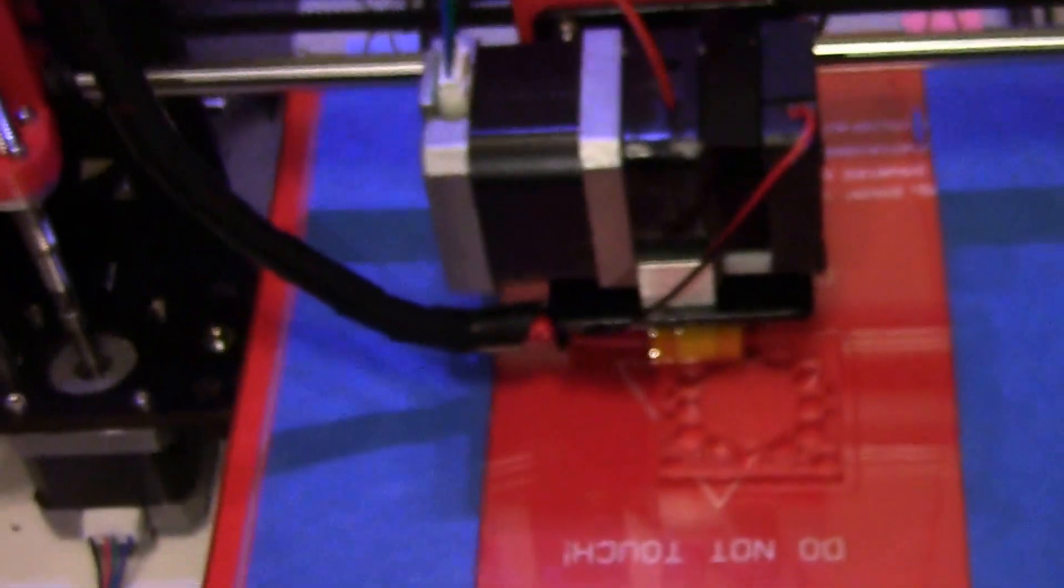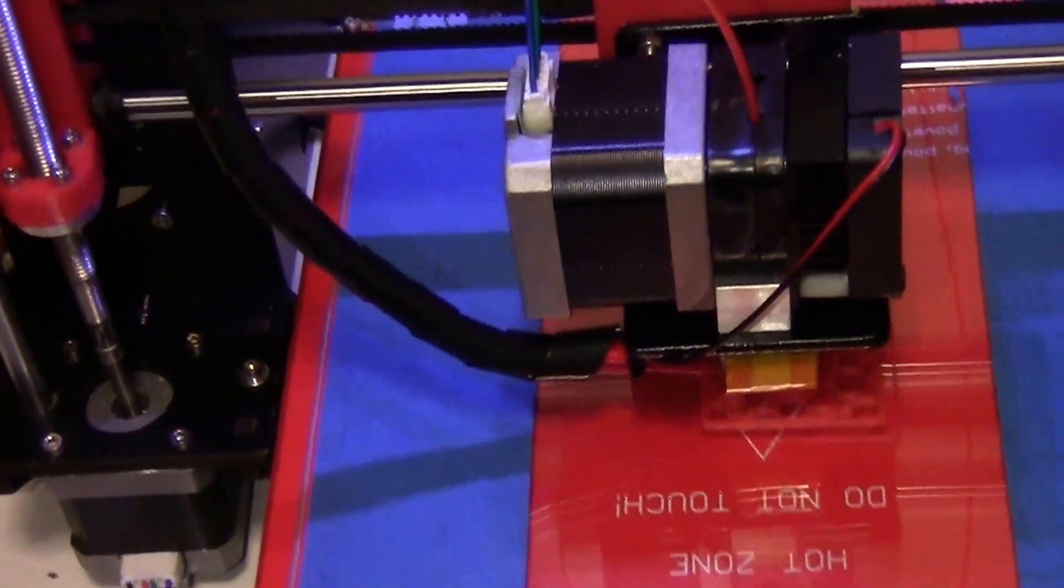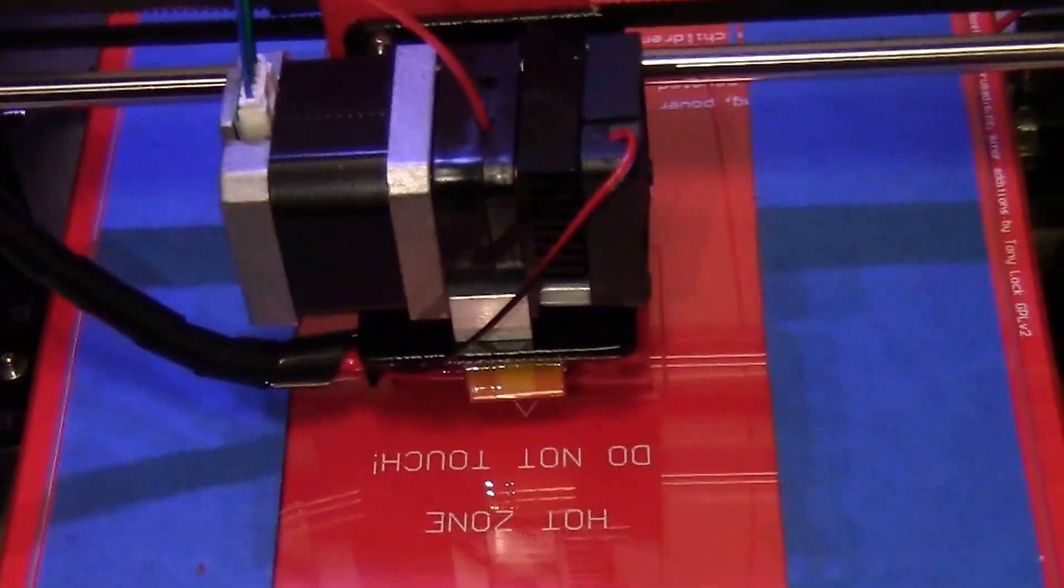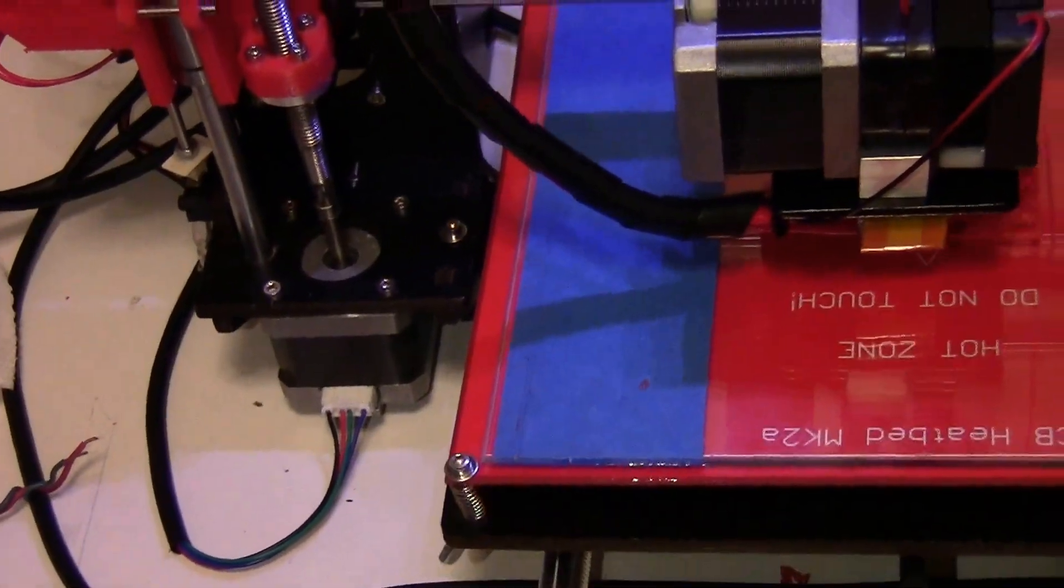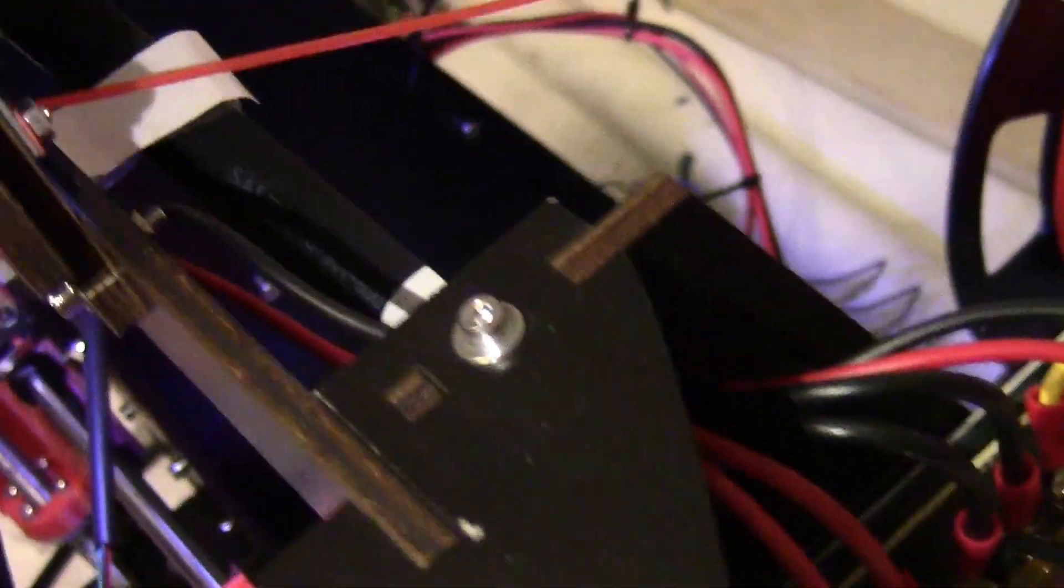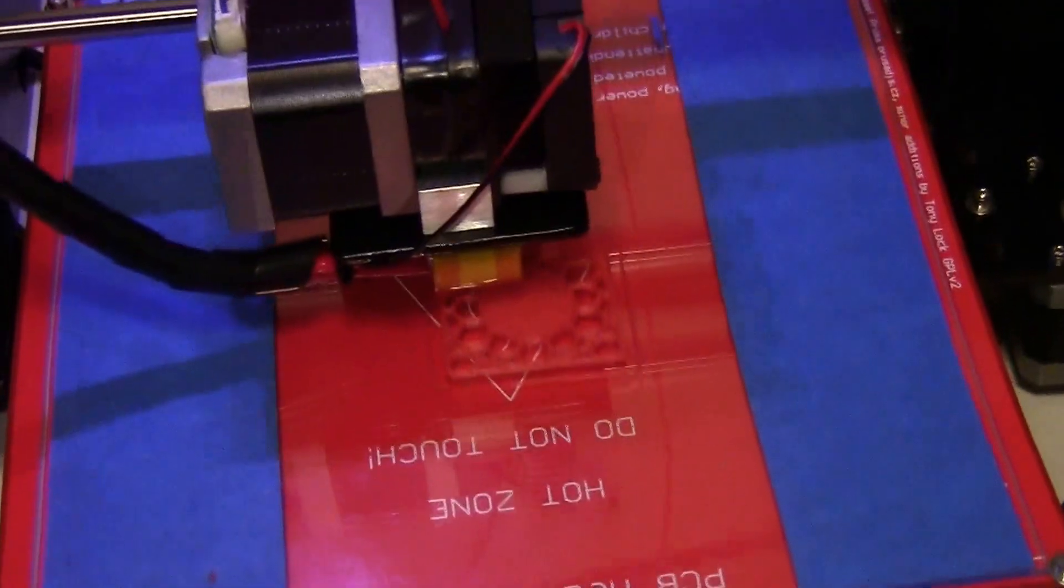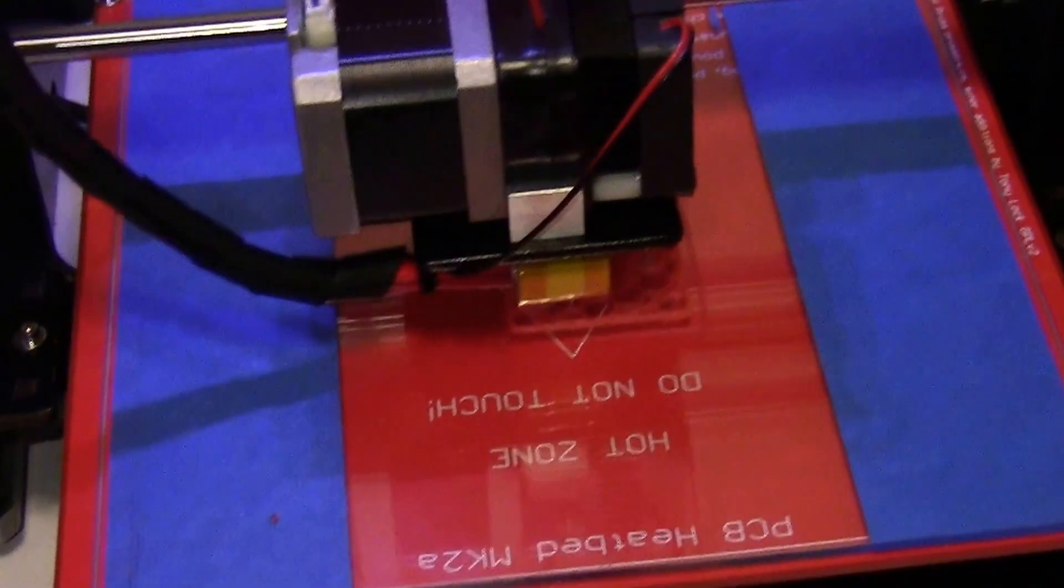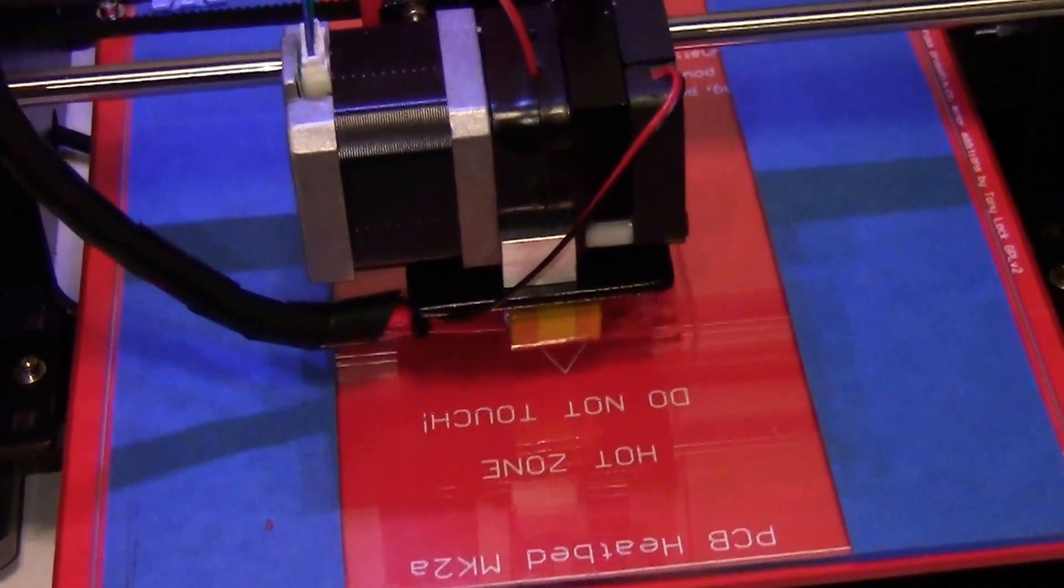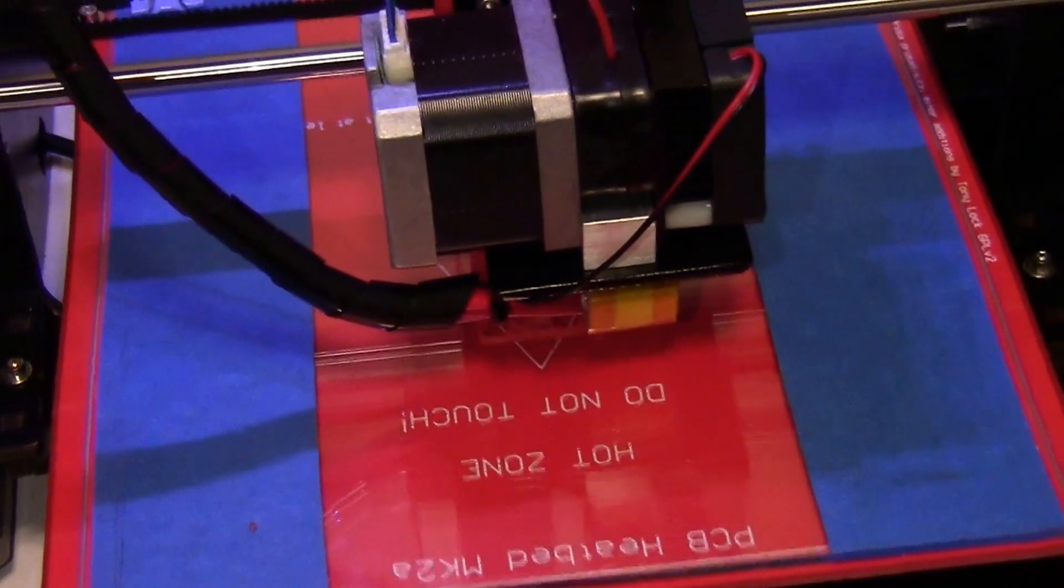So those are the only major problems that I experienced in assembling this. Once I hooked it up, there are like 50 different parts. When you hit the switch on the power supply, luckily for me, no smoke came out from the control board and it actually works. So the actual printing itself, that would be another learning experience, and I just have to play around with all the different settings.